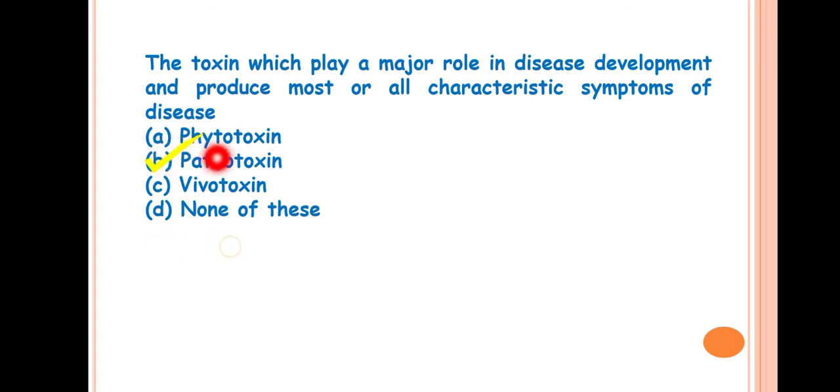Whereas phytotoxin has no relation with pathogenicity and can induce few or no symptoms at all. Whereas vivotoxin is not the inciting agent of the disease.